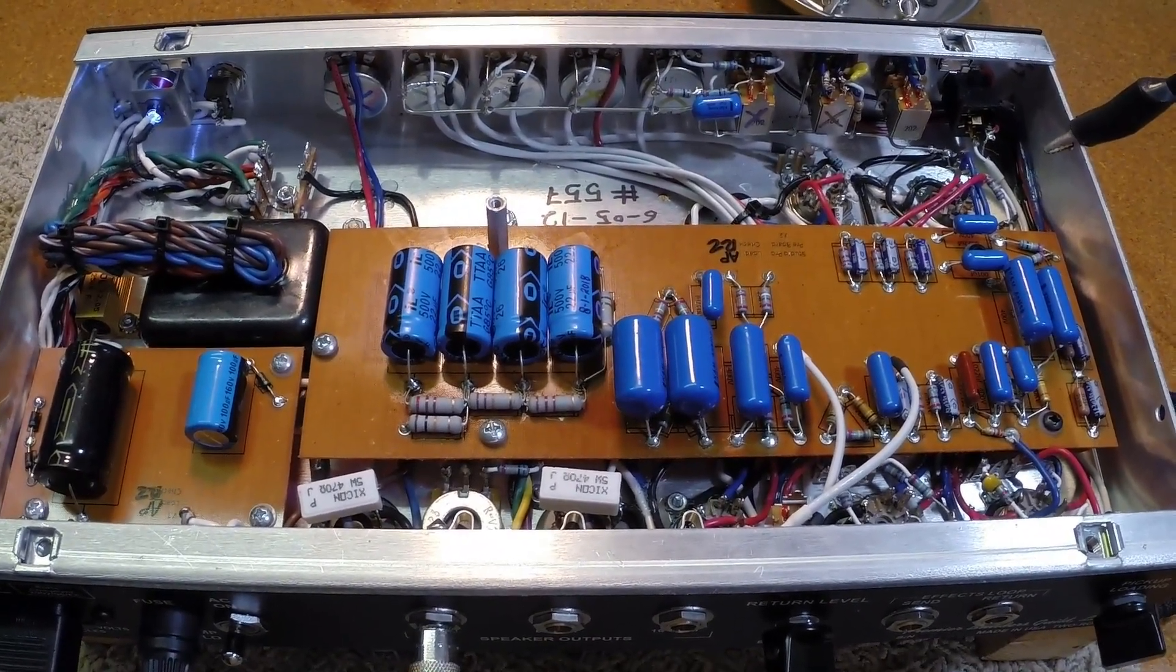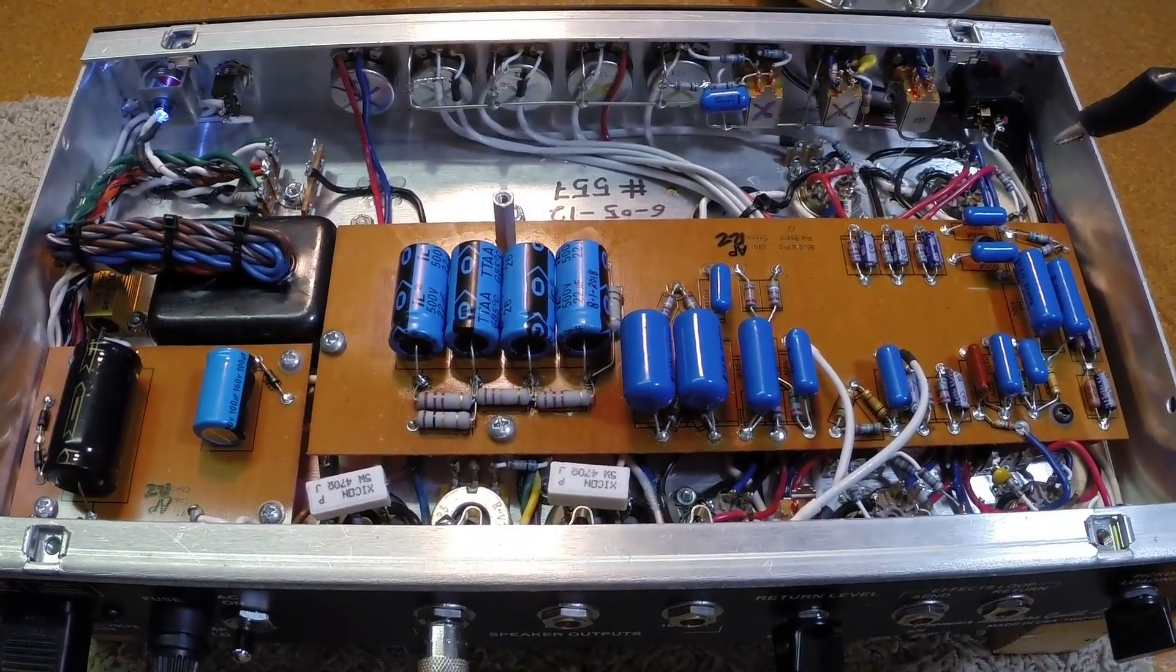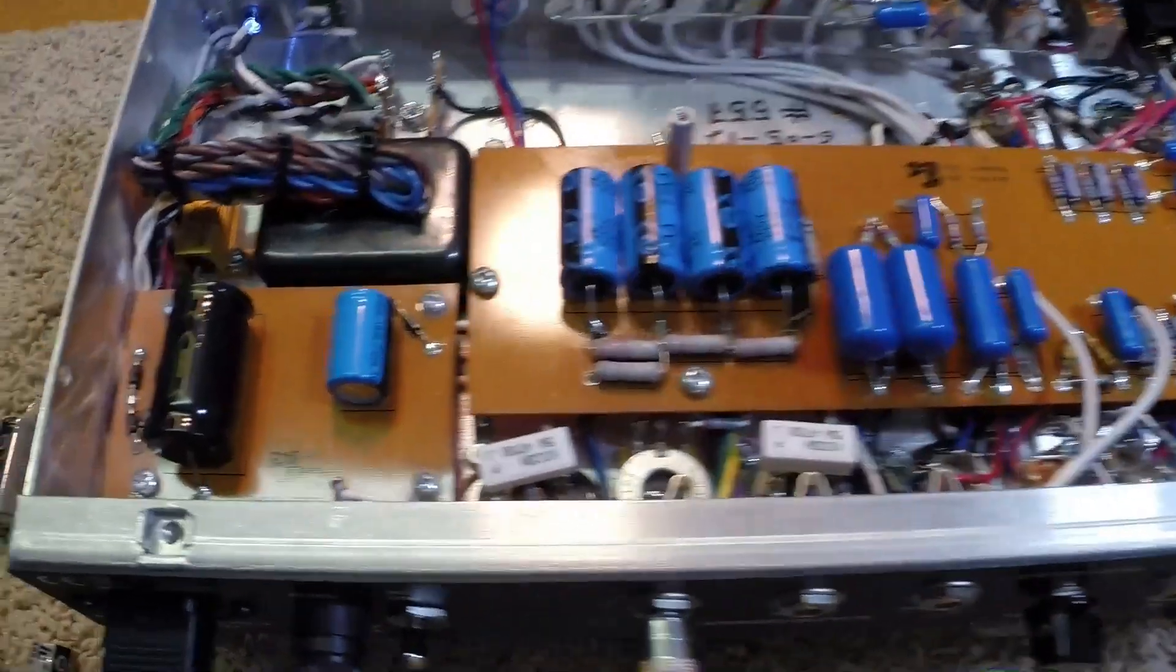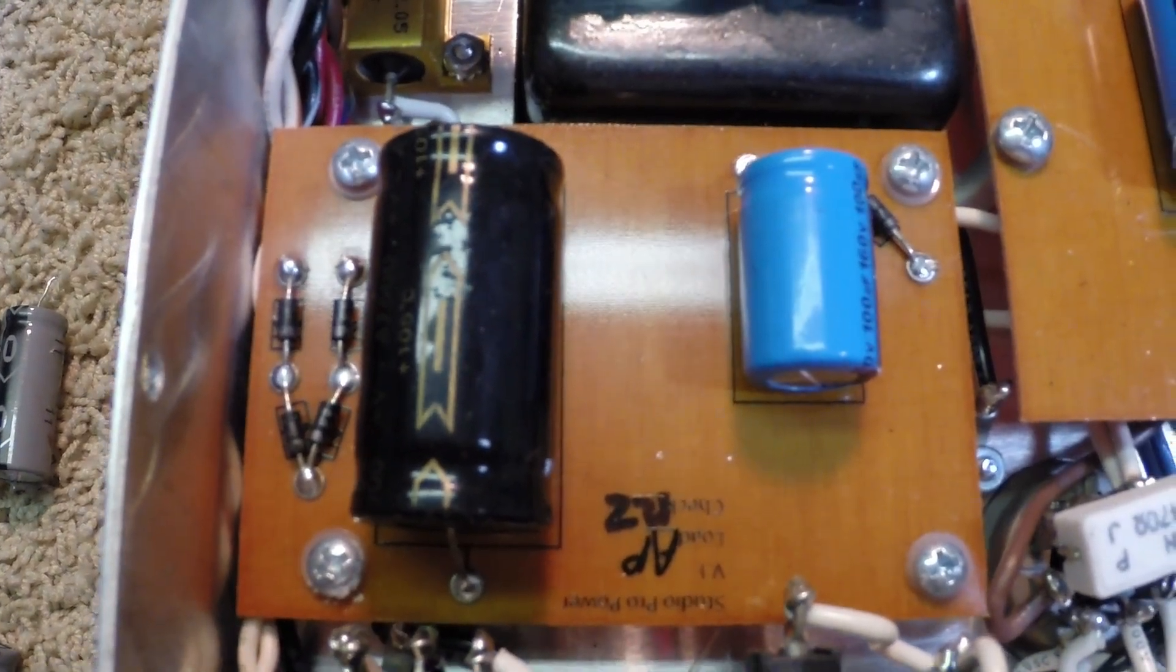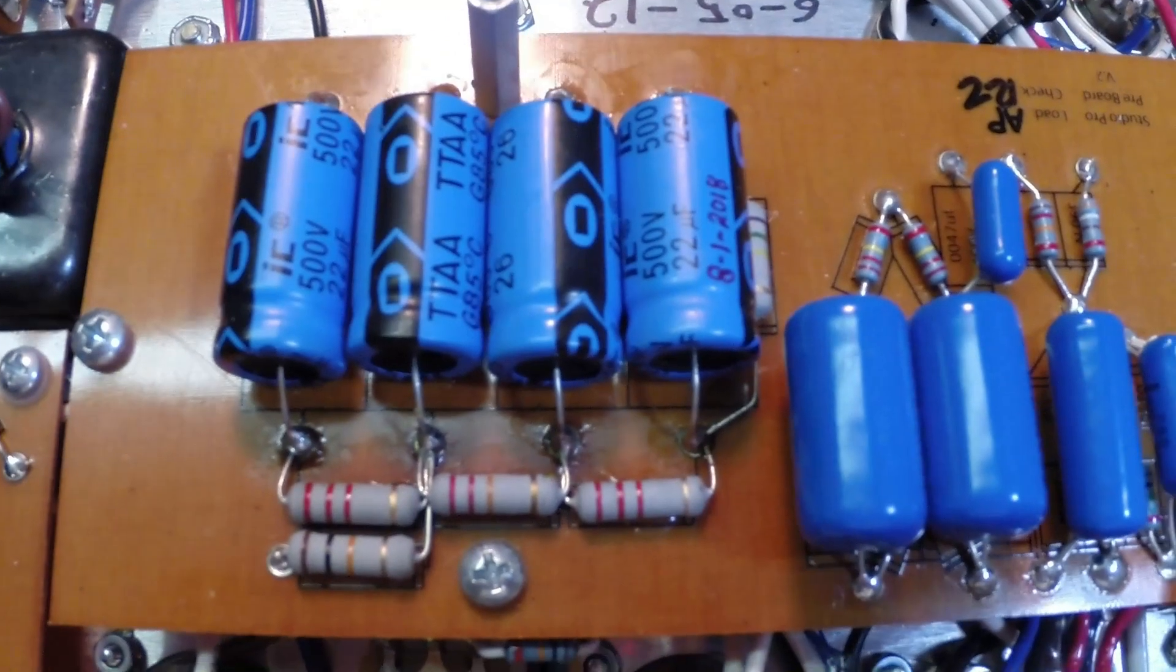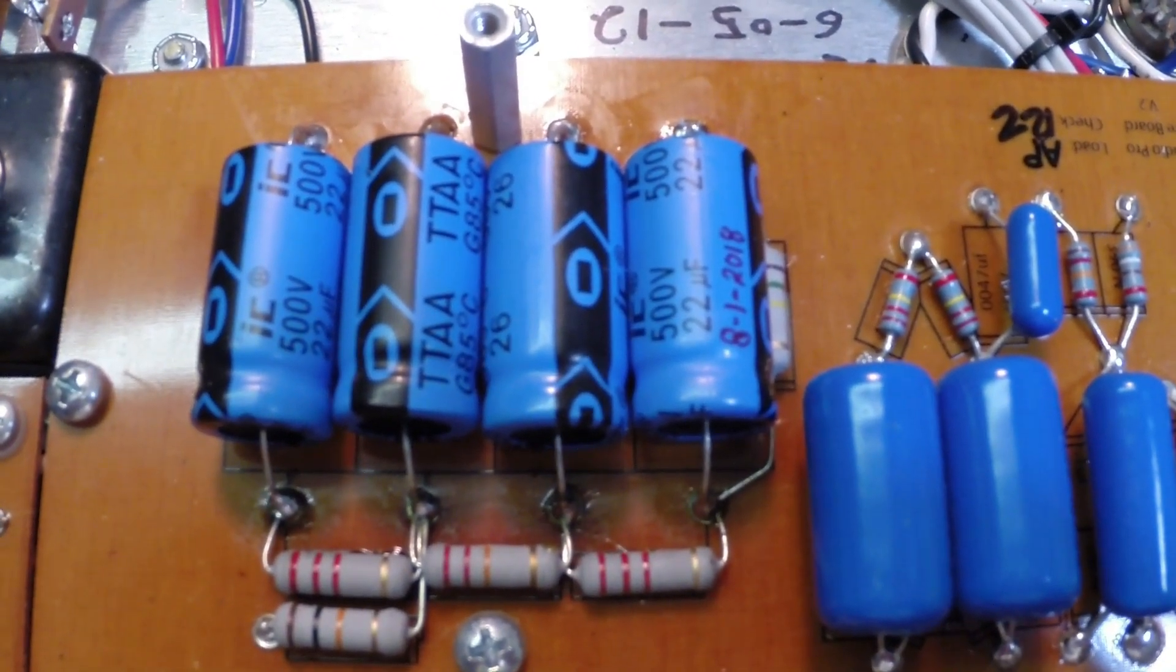He had been advised it was probably a tube problem but I kind of differed with that opinion. Looking into the amplifier this is what we found. We have a 47 microfarad 500 volt F and T capacitor here is your main filter. And over here we have for a screen supply in the lower filters some Illinois capacitors.